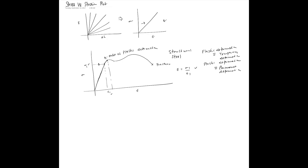Beyond point B is what we call the onset of plastic deformation — this is when yielding has begun to occur. When the material begins to yield it undergoes plastic deformation. It continues to deform, there's a little dip in stress, then the stress rises to a maximum — point D — which is called the ultimate stress point.